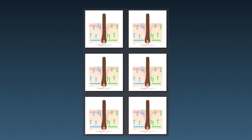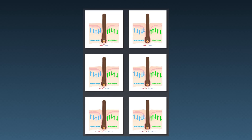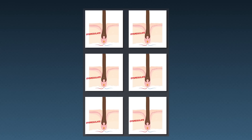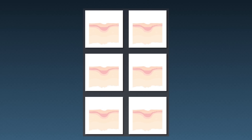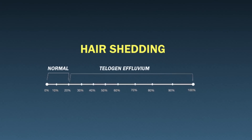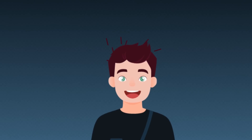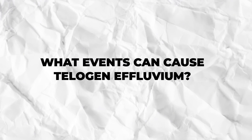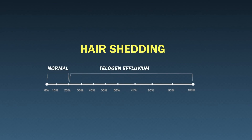Telogen effluvium is when some sort of event disrupts our hair cycle, in some cases causing too many hairs to shed out ahead of schedule, leaving a gap between when those hairs fall out and when new hairs are supposed to grow in to take their place. If some pathological event causes our hair shedding rates to exceed 15 to 20%, we technically have telogen effluvium. Shedding from telogen effluvium usually happens in an even, diffuse pattern across the scalp. There can be mild cases, such as seasonal hair shedding, where in the northern hemisphere we notice slight upticks starting in February and also at the end of July and August.